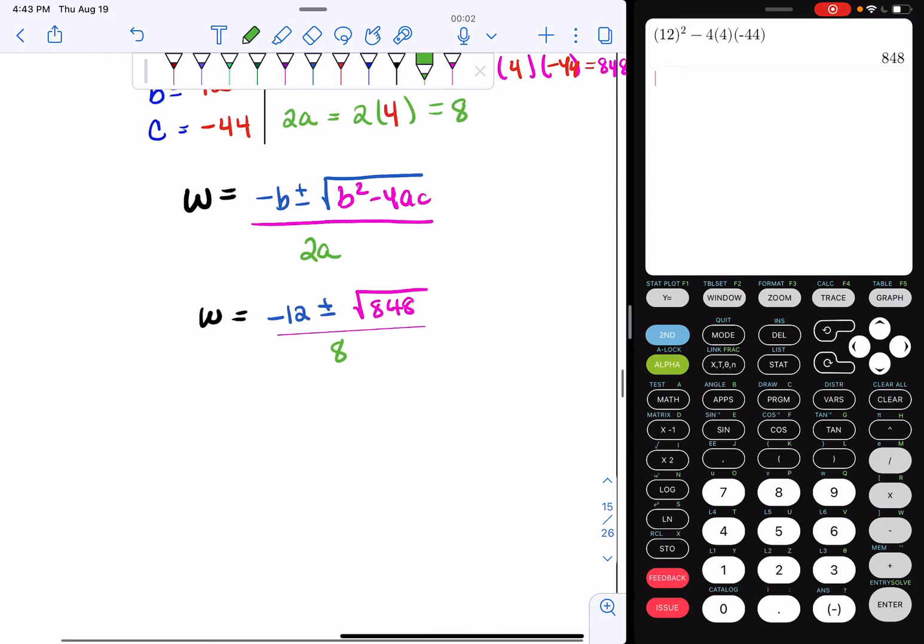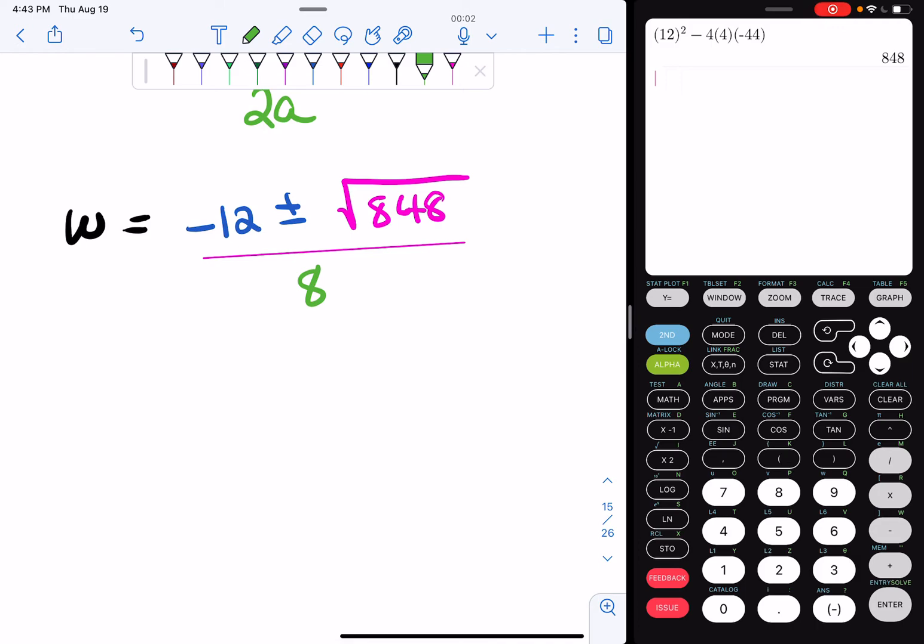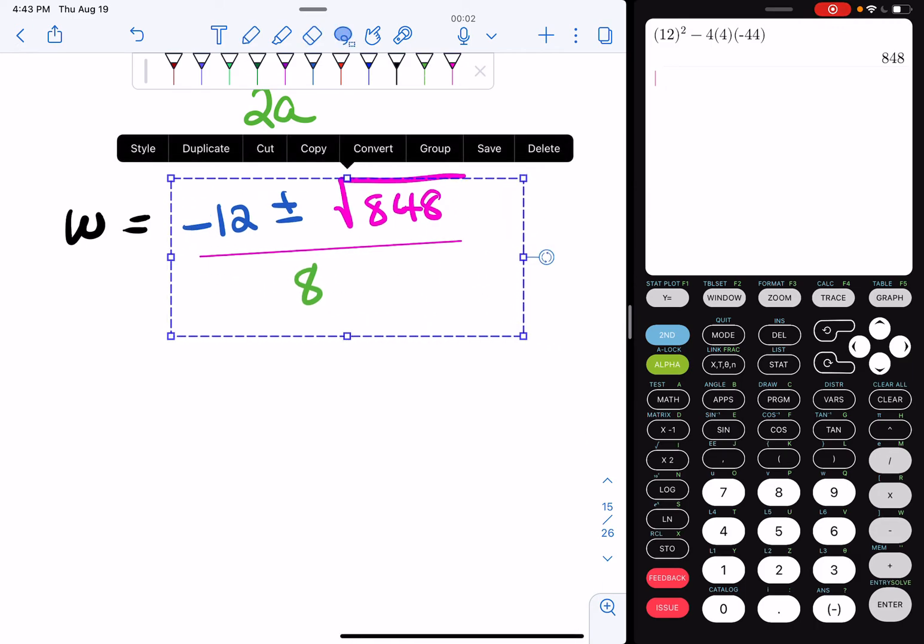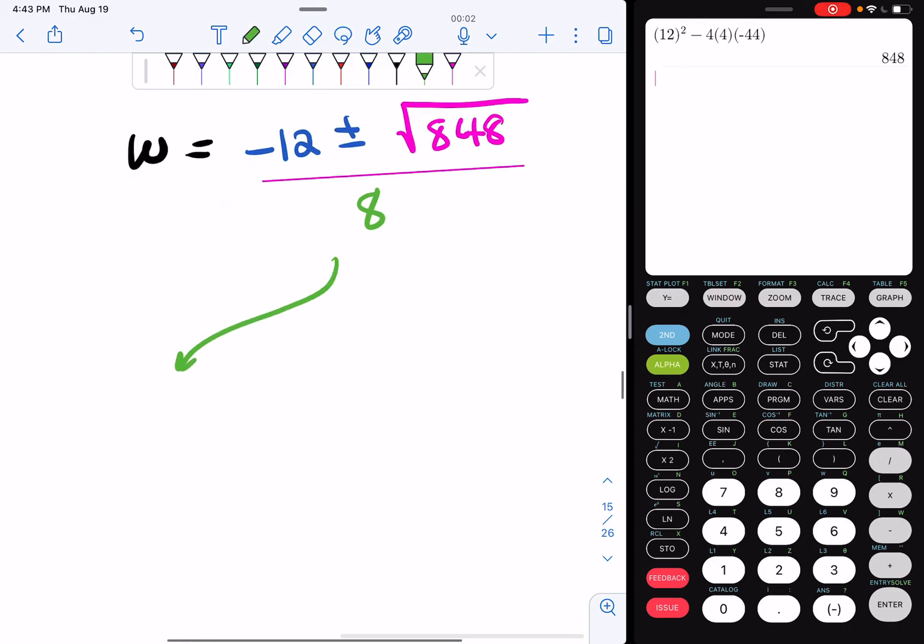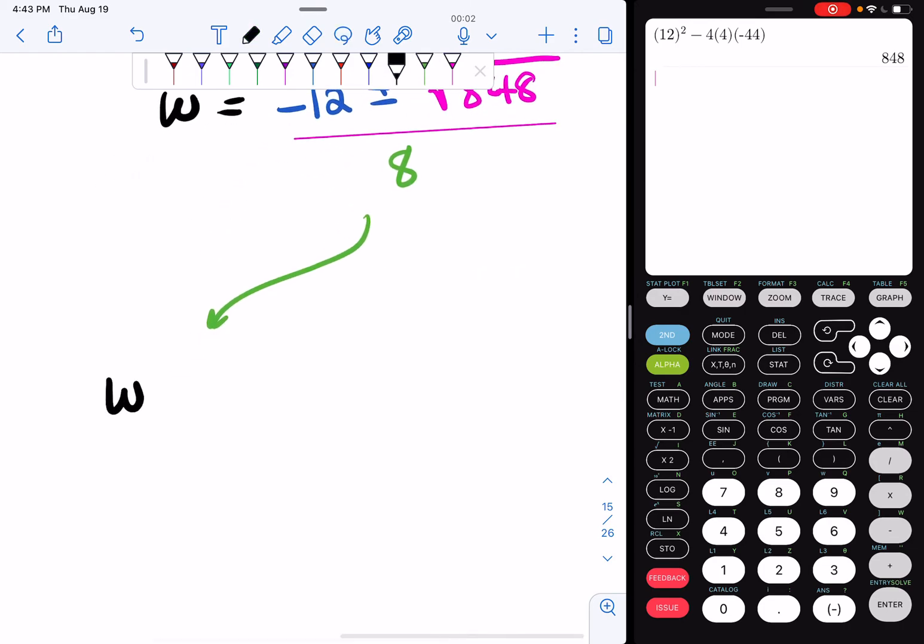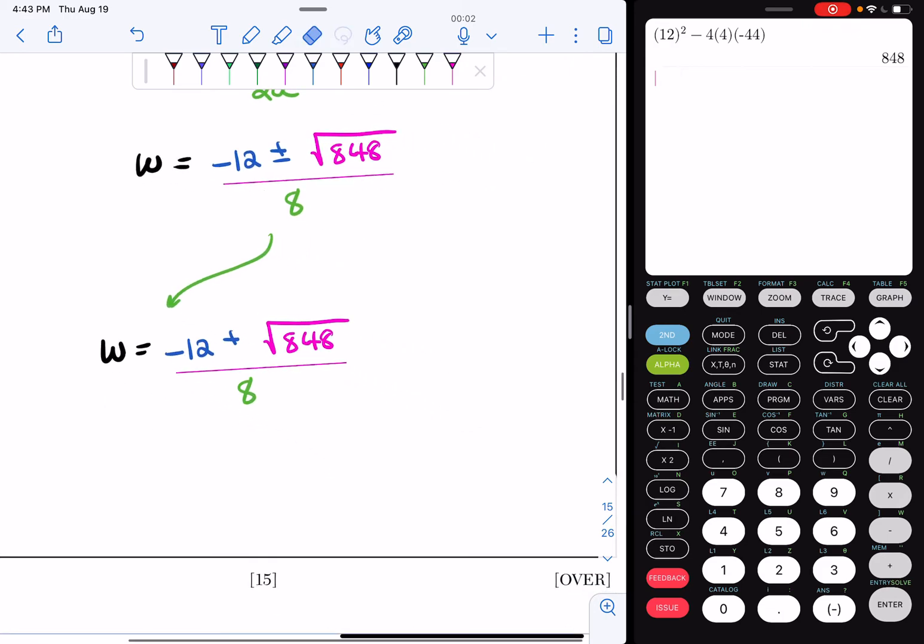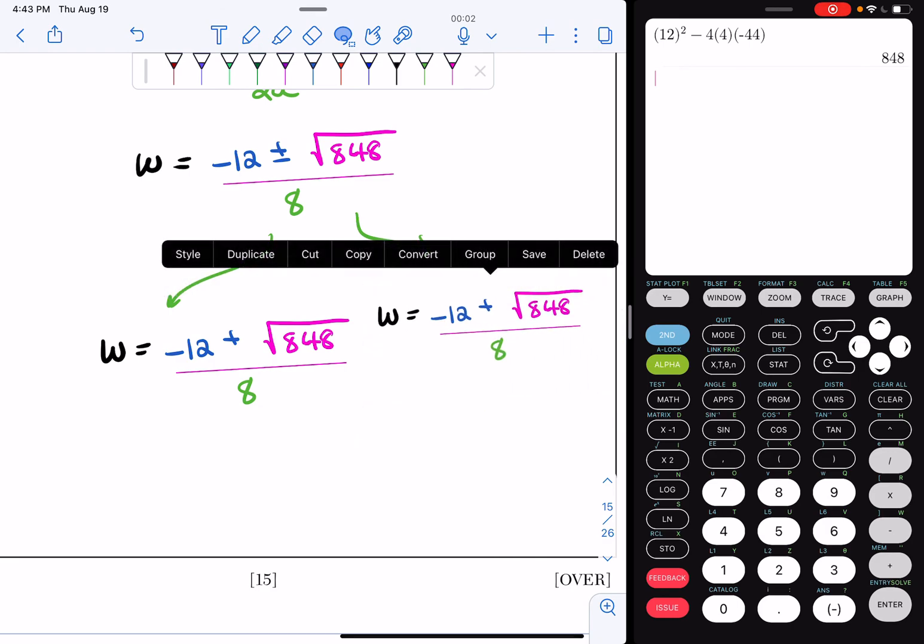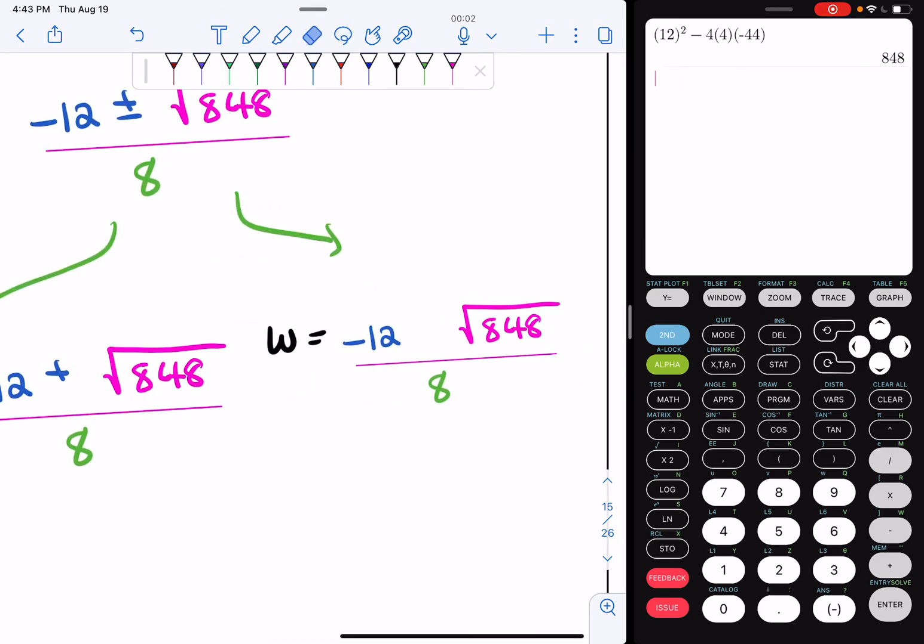So now we can break this up into two separate equations or two separate expressions. We can say this is going to be w equals this, and we just drop the minus and we can also break it up into this. Where we have w equals negative 12 minus radical 848 all over 8.